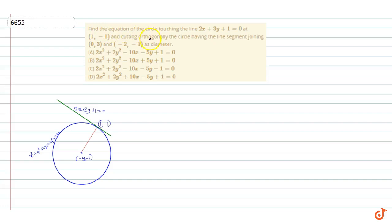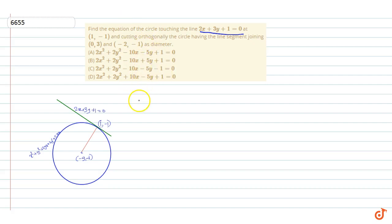In this question, find the equation of the circle touching the line 2x + 3y + 1 = 0 at (1, -1) and cutting orthogonally the circle having the line segment joining (0, 3) and (-2, -1) as diameter. Let the equation of the required circle be x² + y² + 2gx + 2fy + c = 0.